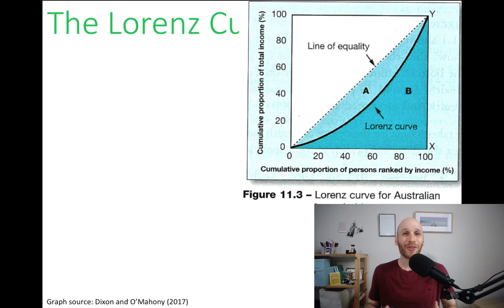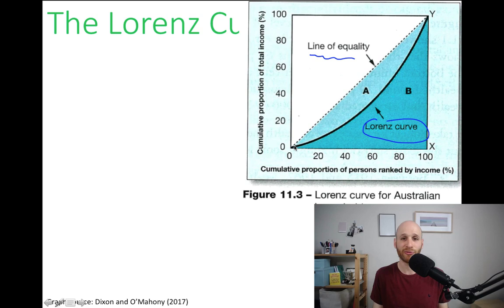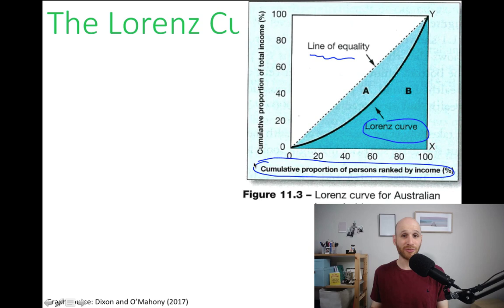The Lorenz Curve looks like this — this graph is courtesy of Dixon and Omani from 2017. You can see here that we've got the line of equality, this dotted line, and then our Lorenz Curve is this curve. On one side we've got the proportion of the population: 0%, 20%, 40%, 60%, 80%, and 100%. And then on the other axis we've got their share of income: 20%, 40%, 60%, 80%, and 100%.